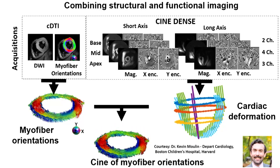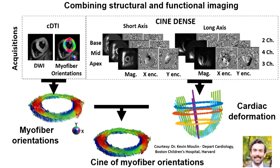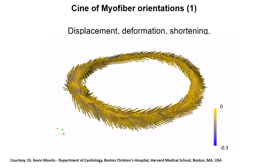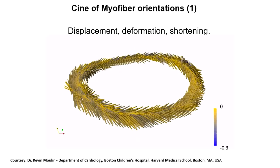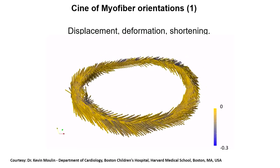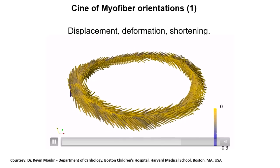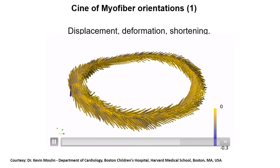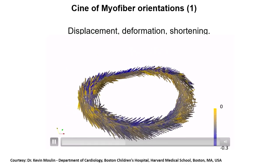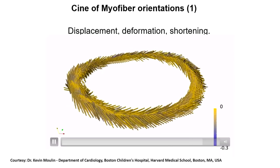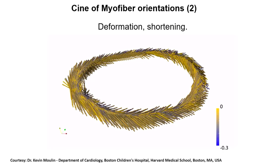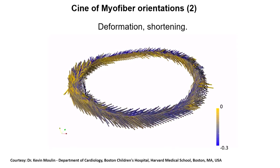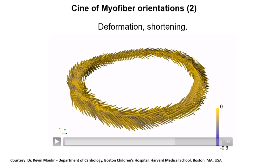One of the challenges is that you're trying to look at diffusion along a fiber, and the fiber itself is shortening, twisting, and rotating. So you have these three motions — displacement, deformation, and shortening — within which the diffusion is taking place. But with the kinds of combined images I just showed you, the potential that Kevin Moulin is demonstrating is to actually begin to look at these individually and tease them out. The previous slide showed all three together.